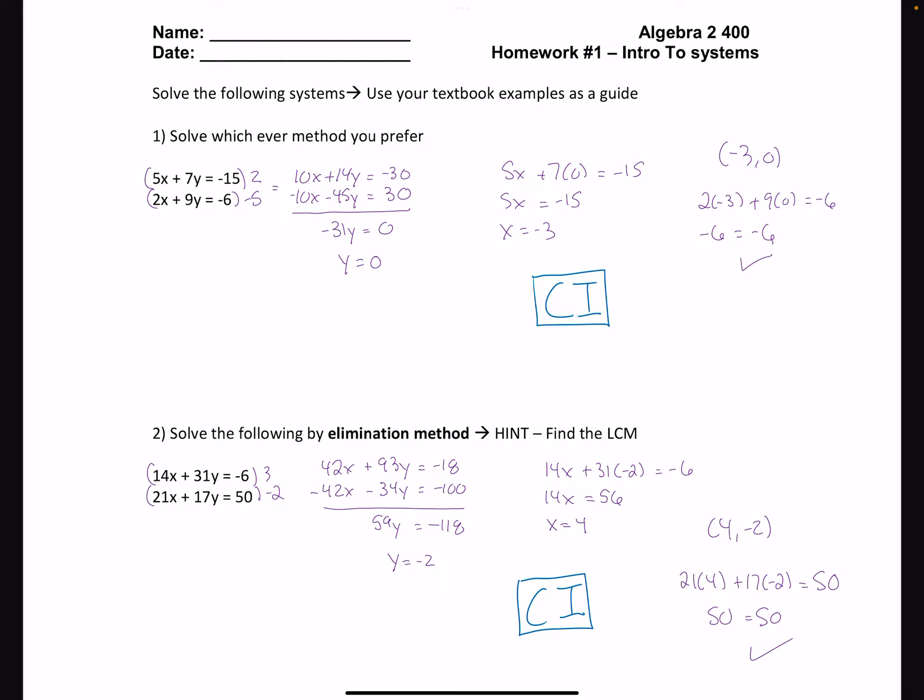10x and negative 10x, so as I added straight down, they cancelled out. I got y to be 0, and I subbed into the top equation to solve for x.